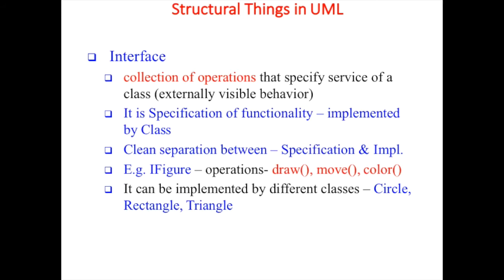Interface is a collection of operations that specifies a service of a class. An interface has a collection of operations - it might be draw, move, or color. For example, if we take the example of a figure, it can be implemented by different classes like circle, rectangle, or triangle. An interface is a specification of functionality implemented by a class - it defines the methods which are implemented by the class.